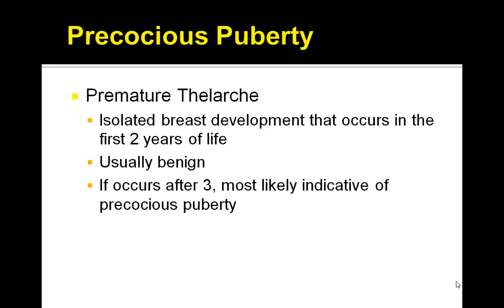How do you make the diagnosis? The first step is to obtain a radiograph of the wrist and hand to determine the bone age. If the bone age is within one year of the chronological age, puberty has not started or has just recently begun. But if the bone age exceeds the chronological age by greater than 2 years, then puberty has been present for at least one year or is progressing rapidly.